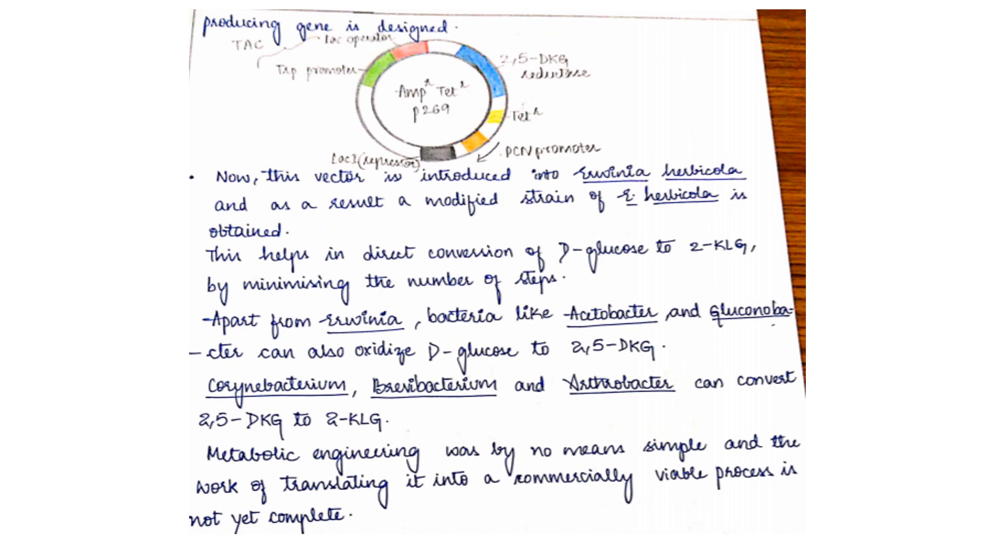Vector is ready now with the desired gene. This vector is introduced into Erwinia and results in a modified strain. Modified strain results in vitamin C production - direct conversion of D-glucose to 2-keto-gluconic acid with very less steps, one or two steps.